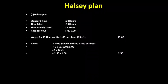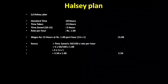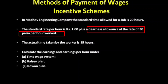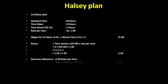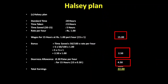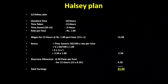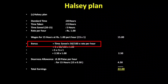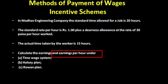For the Halsey plan, the DA for 15 hours at 30 paise per hour equals 4 rupees 50 paise. So total earnings under the Halsey plan: 15 rupees plus 2 rupees 50 paise plus 4 rupees 50 paise equals 22 rupees. The formula for Halsey is: time saved multiplied by 50% into rate per hour.